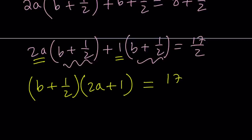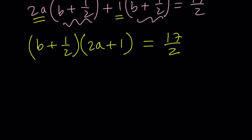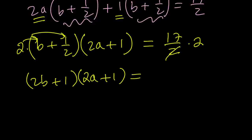So this concludes the factoring part. But the issue is we have a b and 1 half, but we have a 2a here. So they're not really kind of compatible. So let's go ahead and multiply both sides by 2. So the presence of a fraction on the right-hand side also gives you a clue. Multiplying both sides by 2 is a good idea. And if you go ahead and distribute the 2 here, you get 2b plus 1 multiplied by 2a plus 1 equals 17. As you should know, 17 is a prime number.